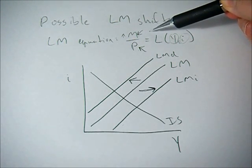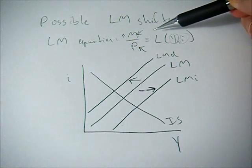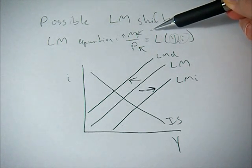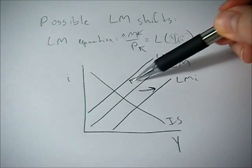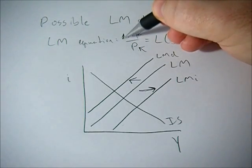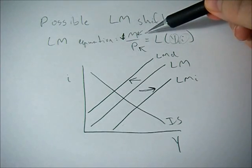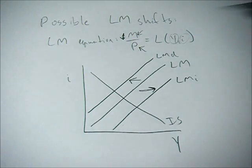Now, if the Federal Reserve or the central bank decreases the money supply, say by selling T-bills, then that LM curve shifts left because we see a decrease in money supply or this M, and that results in a leftward shift of the LM curve.